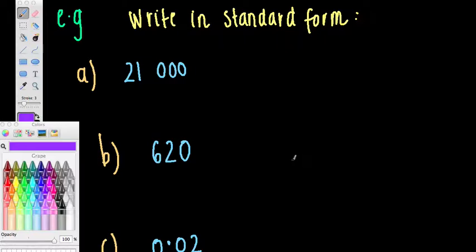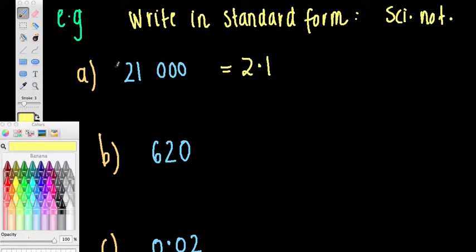Let's look at some examples. Here we have write in standard form. So this means write in scientific notation. We've got our first non-zero digit is here. So what we've got here is 2.1. Now if I wanted to get 2.1 to be 21,000, to what power of 10 am I multiplying? Well, if I've got my decimal point here, 1, 2, 3, 4, that's where it was originally. If I multiply 2.1 by 10 to the power of 4, 1, 2, 3, 4, I should get 21,000.